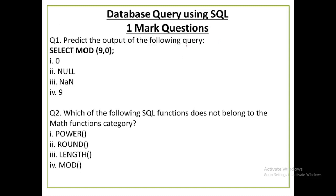You have to predict the output of this query. The SELECT statement uses the MOD function with two numbers. You divide the first number by the second number, but the second number here is zero. If the dividend is any number and the divisor is zero, what is the result of MOD? MOD returns a null value. So the answer is null value.